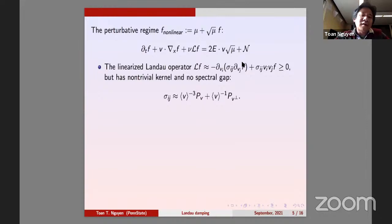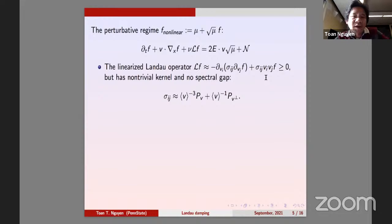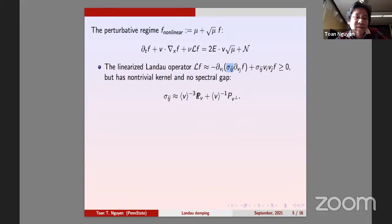The nonlinear Landau operator is like a Laplacian in v with some coefficients; the linearized operator is similar. This operator is positive and has a non-trivial kernel that can be modulated using conservation laws. However, there's no spectral gap, because the coefficients sigma_ij — convolutions of v with f where f is Maxwellian — are degenerate for large v, like v to the minus three or v to the minus one. So it's not straightforward to get decay.